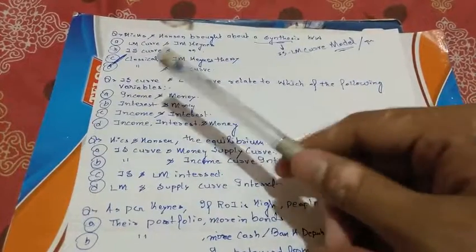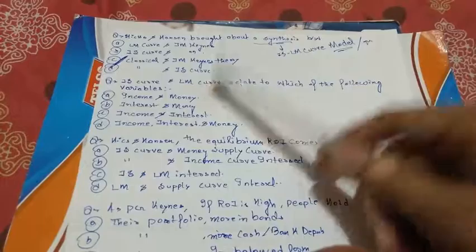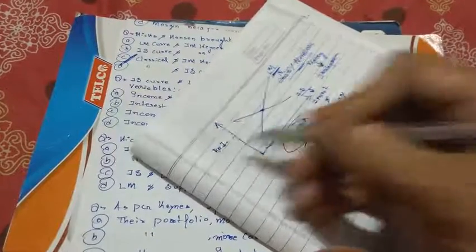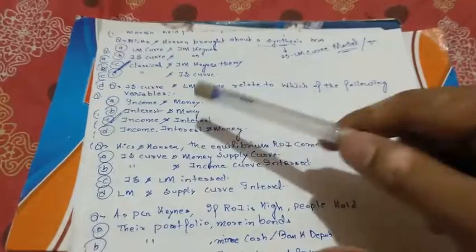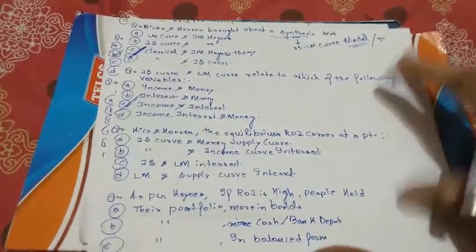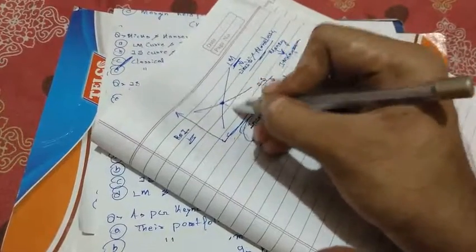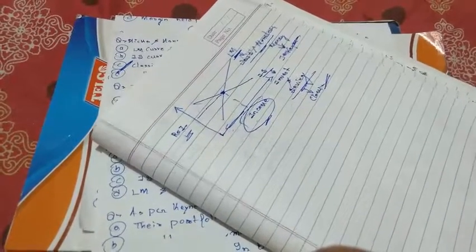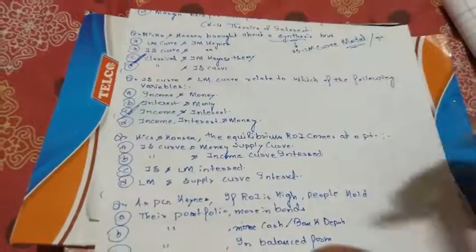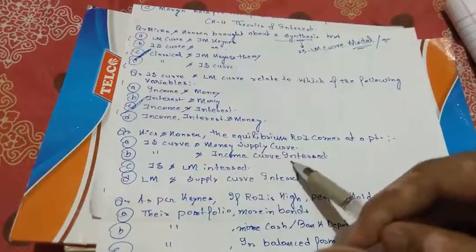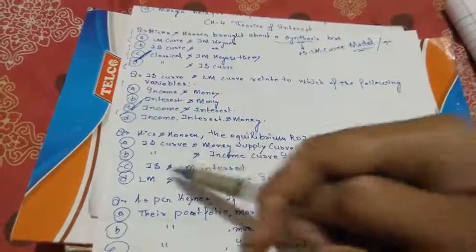Next question: the IS curve and LM curve relate to which variables? The variables are income and the rate of interest — option C. The IS-LM curve takes income and interest as variables on the x-axis and y-axis. Regarding equilibrium: in Hicks and Hansen, the equilibrium rate of interest comes at the point where the IS and LM curves intersect — option C.